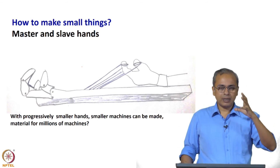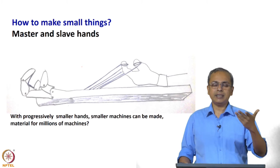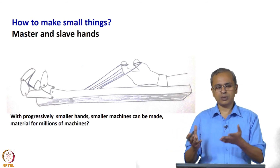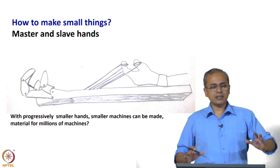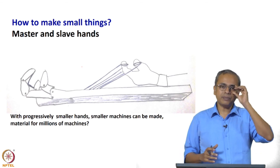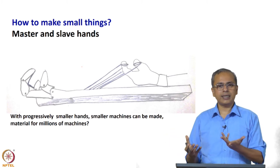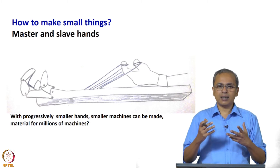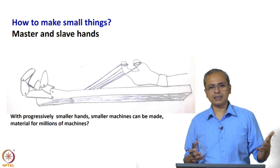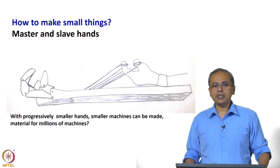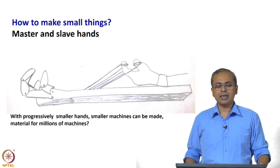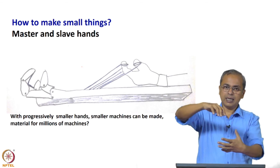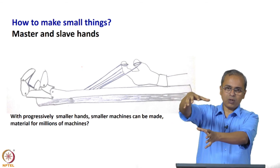Feynman also considers the idea of making machines at the small scale. He takes this broader picture of a master hand and slave hand. This is something that has existed in the nuclear industry, where you are working with radioactive materials and therefore cannot have easy contact with the materials you are working with. One way to deal with that is to have some kind of a robotic hand — in another location which is not radioactive you attach things to your hand and try to open a bottle. This robotic hand will actually be elsewhere, go grab a bottle, and do exactly the same action that you are doing. Whatever you are doing with your hand, it will repeat.